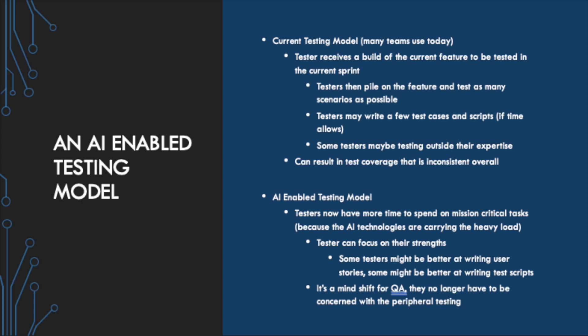When we utilize AI technologies, we really allow our testers freedom — the time they need to specialize and focus on their strengths. One tester might be really good at writing test cases, another at documentation, and another at mission critical API test scripts. They have the time to focus on that and improve the mission critical core required during the sprint, then hand off the heavy workload of improving code coverage to the AI technologies on the back end. It's very empowering and relieving to the tester — it's really a QA mind shift, and that's the most important thing.